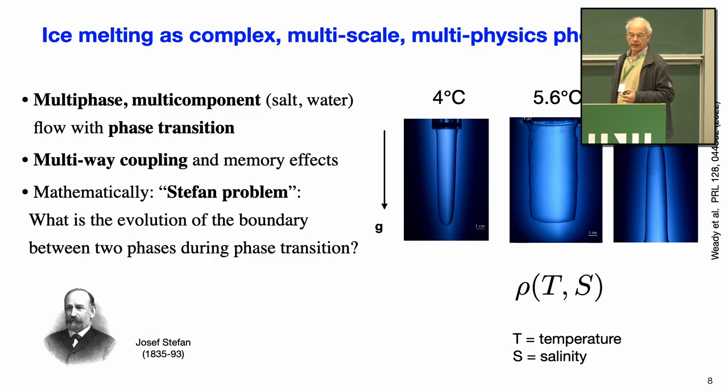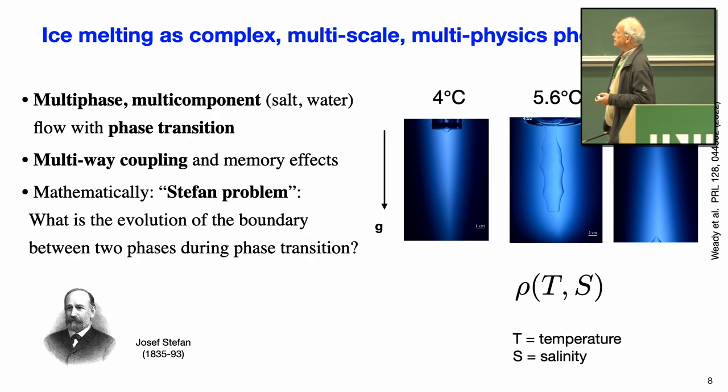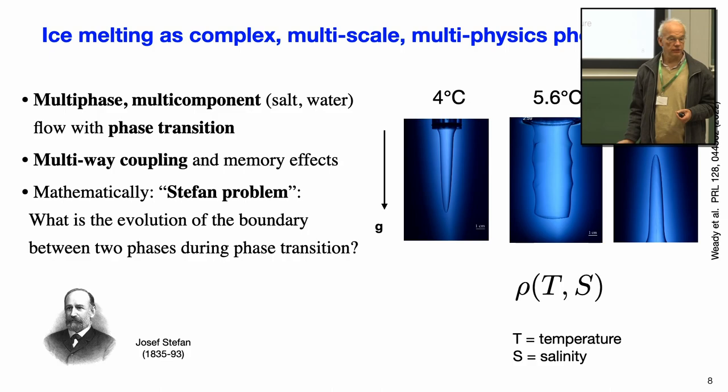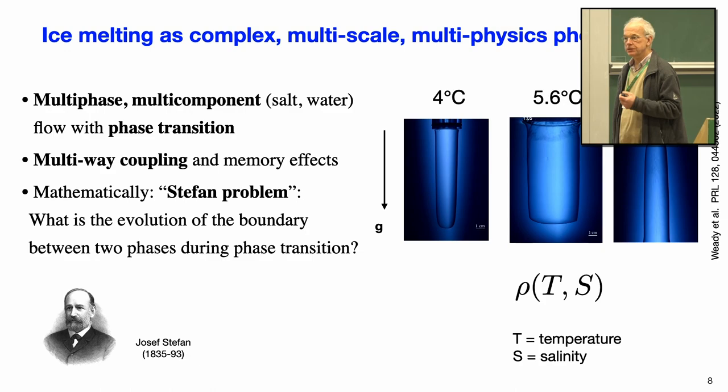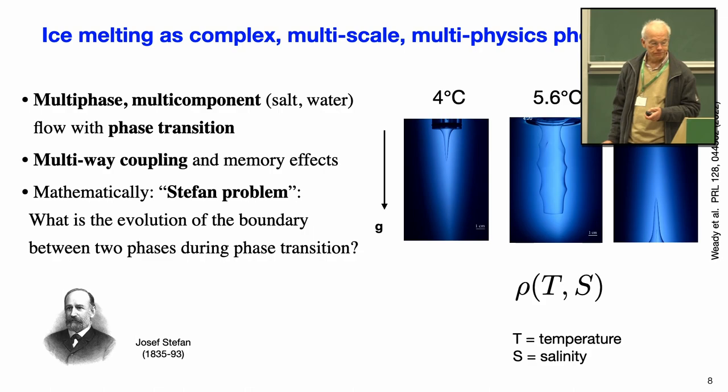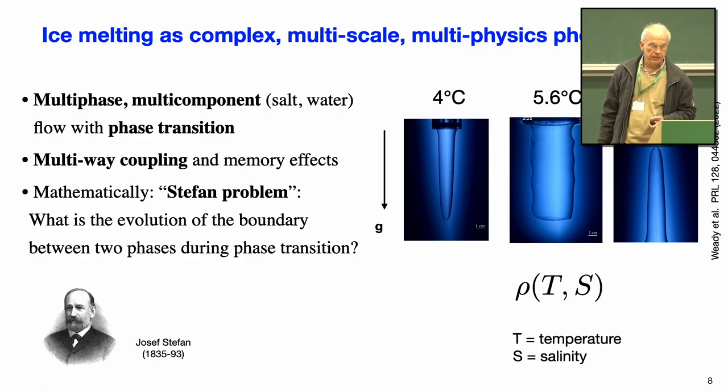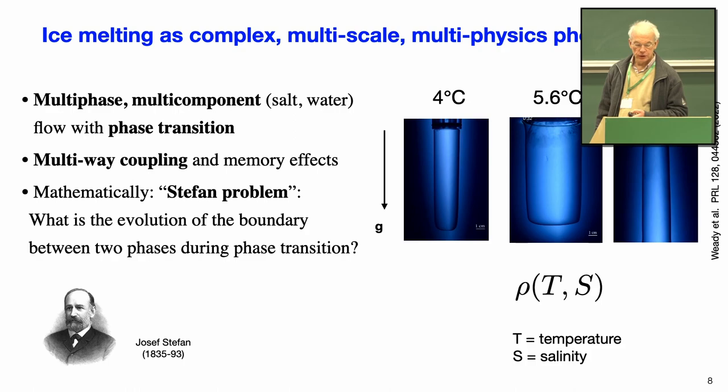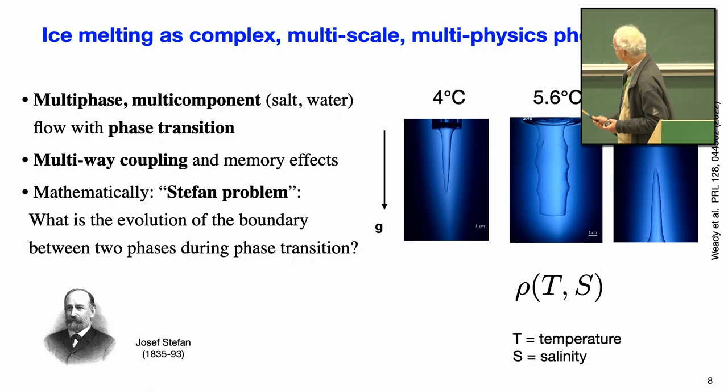The lack of understanding is at a fundamental level. Ice melting is a complex, multi-scale, multi-physics phenomenon. It's multi-phase and multi-component with salt and water, it has a phase transition, and it is multi-way coupled with memory effects. From a mathematical point of view, it's a Stefan problem — what is the evolution of the boundary between two phases during the phase transition?